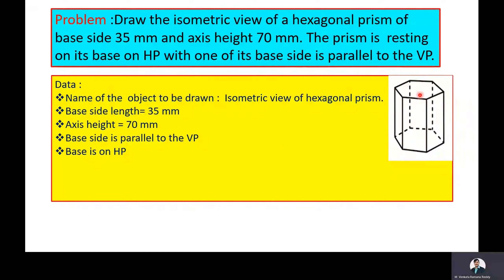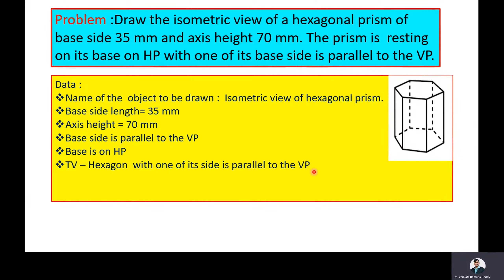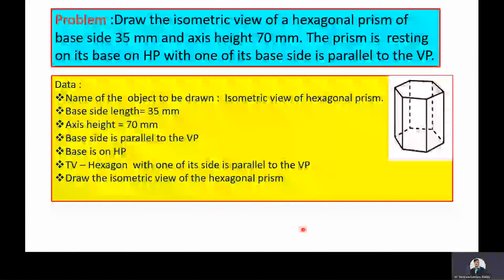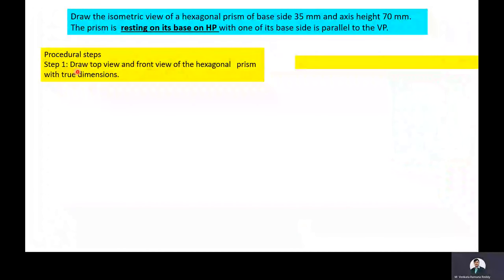The top view of the hexagonal prism is a regular hexagon with one of its sides parallel to the vertical plane. Our object is to draw the isometric view of the hexagonal prism. The first step involves drawing the top view and front view of the hexagonal prism with true dimensions, since we are going to draw the isometric view.